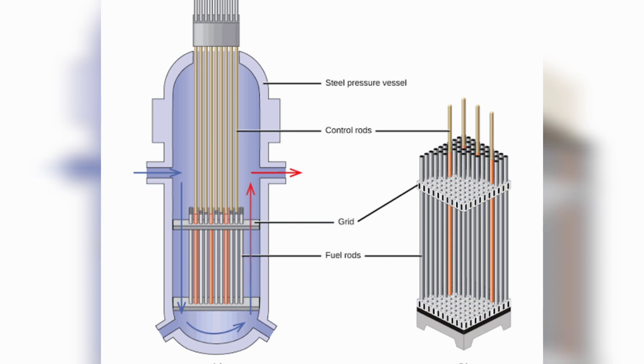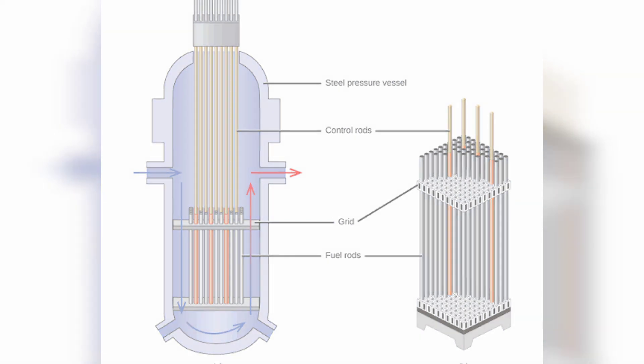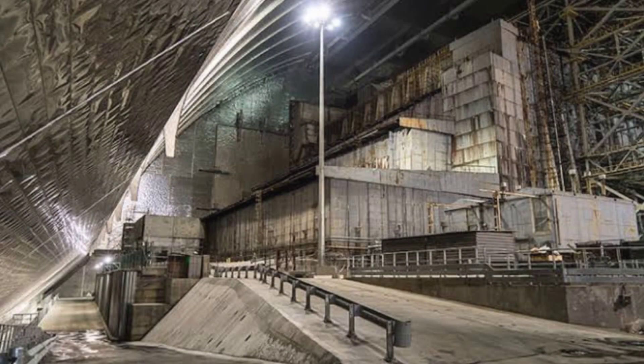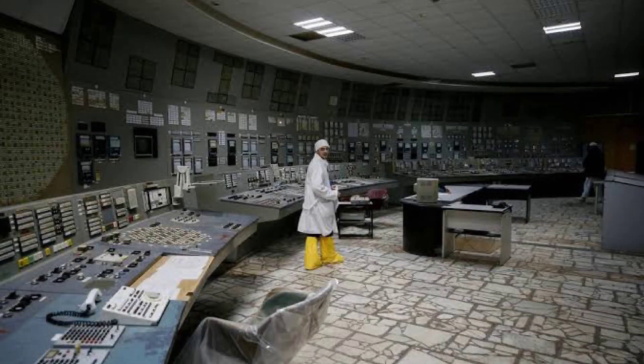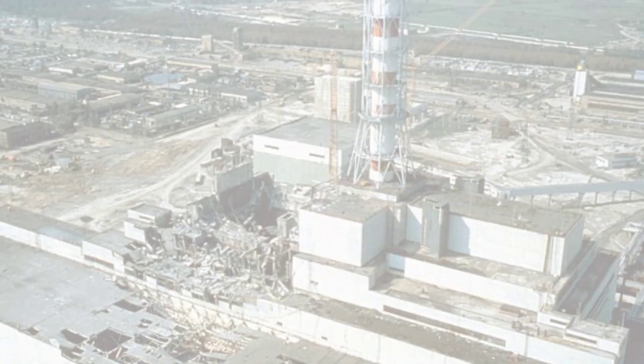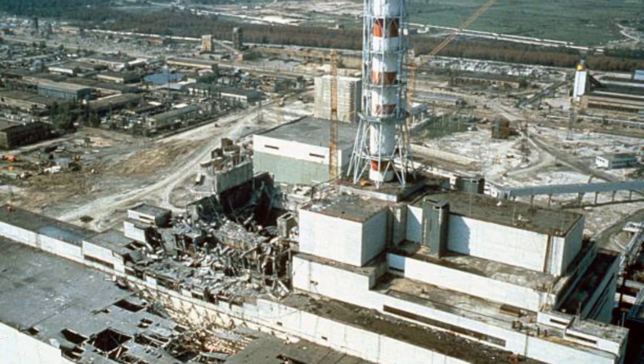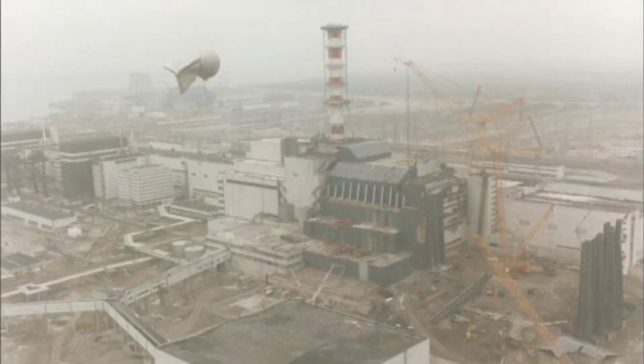The reactor uses control rods to manage this chain reaction. At Chernobyl, there were four reactors — the Soviet-designed RBMK-1000 reactors.